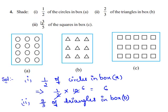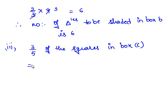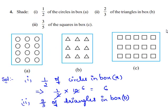Now let us consider the third part: 3 by 5 of the squares in box C. This implies 3 by 5 of the total number of squares in box C. In box C there are 15 squares.